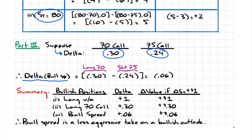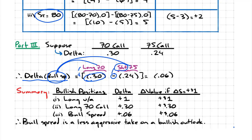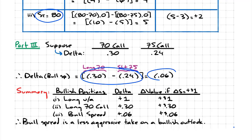Delta measures how sensitive the position is to changes in the price of the underlying asset. The components of the bull spread are the long 70 call — positive exposure — and the short 75 call — negative exposure. So we enter the delta for the 70 call as positive 0.3, and the delta for the 75 call as negative 0.24. Combining them: 0.3 minus 0.24 equals 0.06.